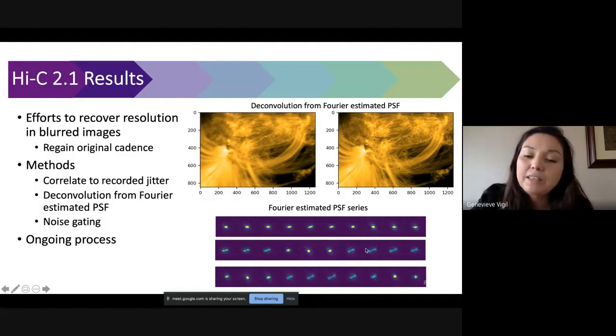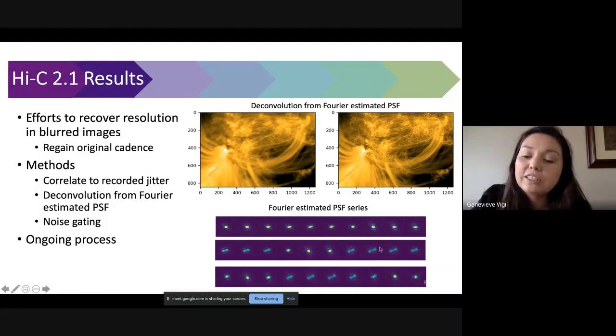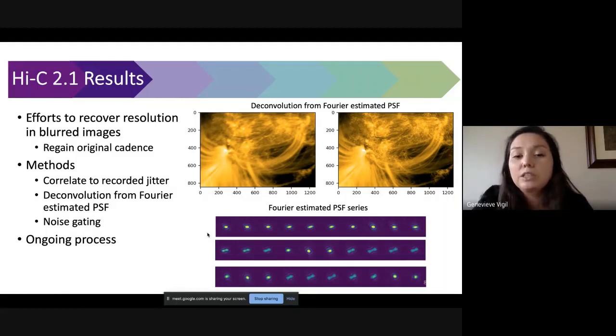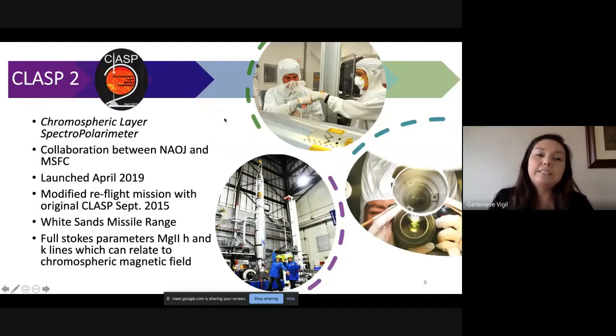We are trying to recover some of those blurry frames. We do actually measure jitter during flight, so using a combined knowledge of that jitter data and a Fourier analysis to estimate the point spread function, we are able to take some of the moderately blurred images and regain some high resolution content from that. Of course this is an ongoing effort. We haven't achieved a lot of success for very motion blurred images.